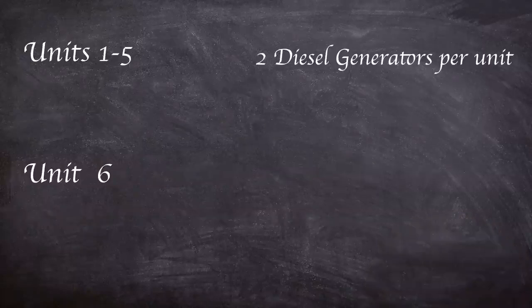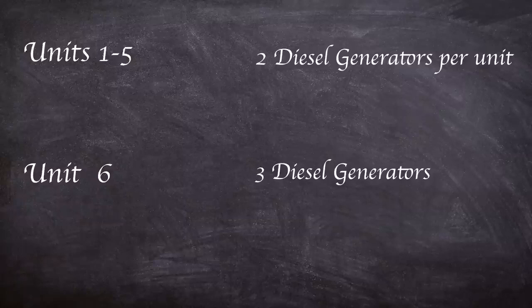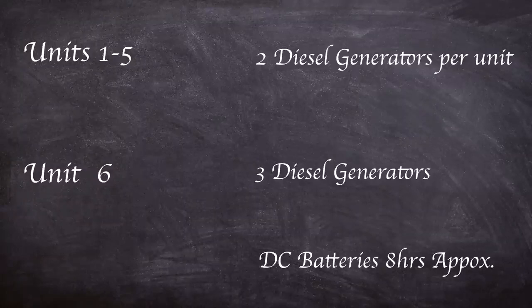Units one to five had two diesel generators each and unit six had three. The batteries gave the power plant up to eight hours of emergency power in the case of electrical isolation from the grid.